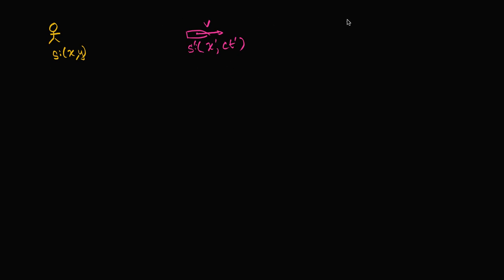Now let's say we have a third character — this is going to get interesting. This third character is traveling with a velocity u in my frame of reference, so u is equal to change in x over change in time. If we know all of this, let's see if we can figure out what this velocity is going to be in the S prime frame of reference — in this third character's frame of reference. What we want to figure out is the change in x prime over change in t prime.